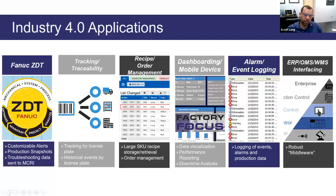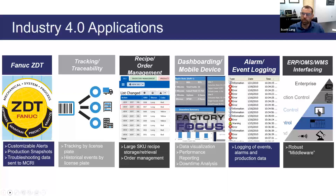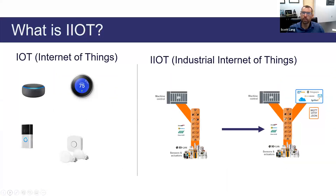Motion Controls is participating in the early phase one and phase two areas. With our Impact IQ product, we do tracking and traceability — attracting products through their life cycle in the manufacturing area — large SKU recipe and order management, dashboarding of production data on both fixed screens and mobile devices, alarm and event logging, and interfacing to enterprise ERPs or warehouse management systems. Also FANUC's ZDT product allows us to capture lots of data and do predictive analysis. With that, I'd like to turn it over to Cam for more details on the Internet of Things.